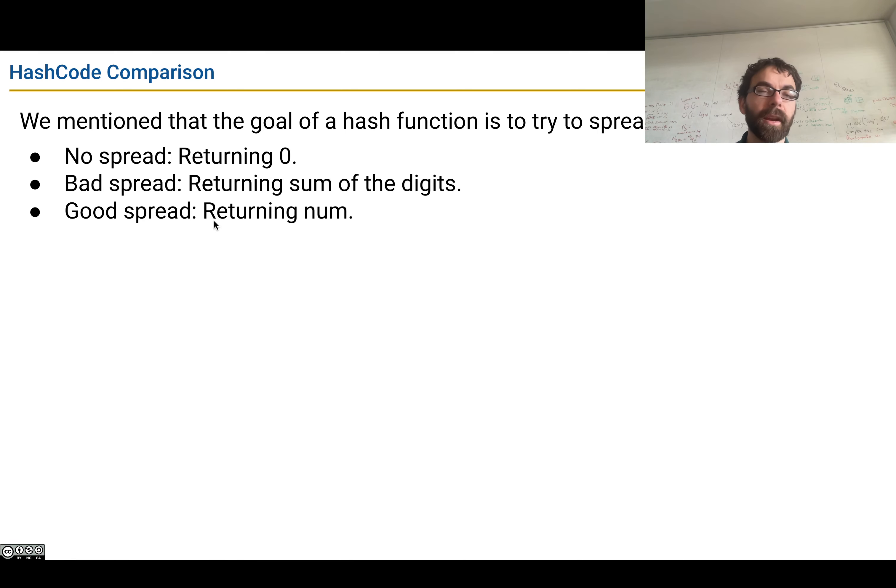Good spread would be, as we saw, returning num as our hash code. The intuition there is that if the goal of a hash code is to take something and turn it into an integer, well, if we already have an integer, there's no need to do anything. That's another way of thinking about why num is the right hash code.